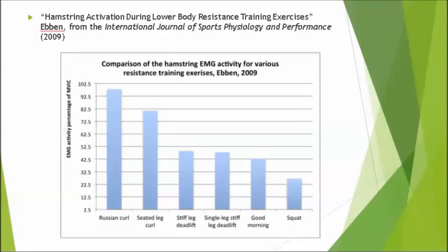Another piece of research is the article Hamstring Activation During Lower Body Resistance Training Exercises published by Eben in the International Journal of Sports Physiology and Performance in 2009. This study found, using EMG, that a back squat elicited, on average, only about 25% of the hamstring's maximum voluntary contraction. However, the quadriceps were working at around 270% the effort of the hamstrings during a back squat, so it is very obvious which muscle group is the agonist here.